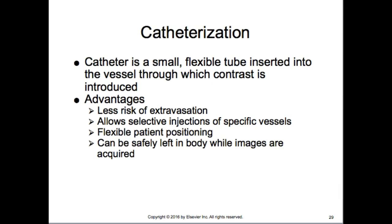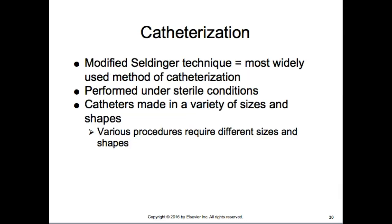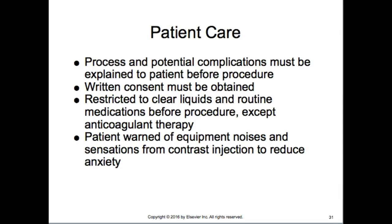Catheters are small and flexible — they are soaked in saline and have wires within them so they can be guided exactly where needed. Advantages include flexibility for positioning, safety within the body, and low sterilization risk. The Seldinger technique is most widely used, performed under sterile conditions. Catheters come in a variety of sizes and shapes depending on the procedure — larger for deploying stents, smaller for diagnostic contrast runs.